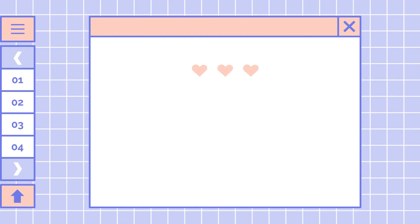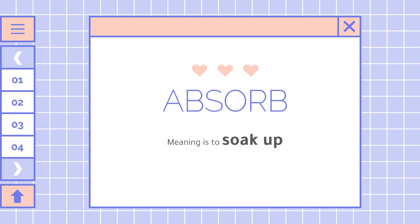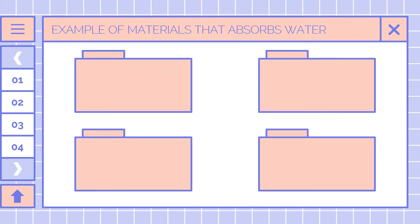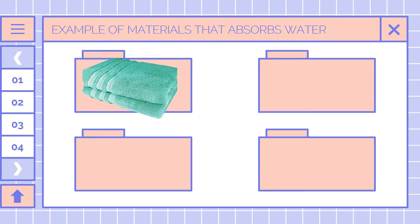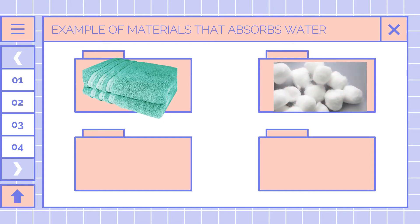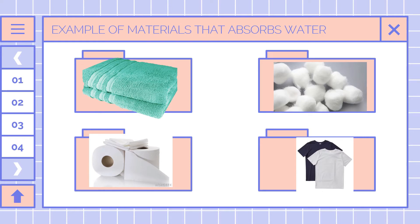So the first one that we need to define is the word absorb. So what is the meaning of absorb? That is to soak up. In Tagalog, sumisipsip ng tubig o ng liquid material. So that is absorb — meaning is to soak up. So what are the examples of materials that absorb water? The first one is a body towel or towel. The second one is cotton. The third one is tissue. And the last one is the cotton shirt.